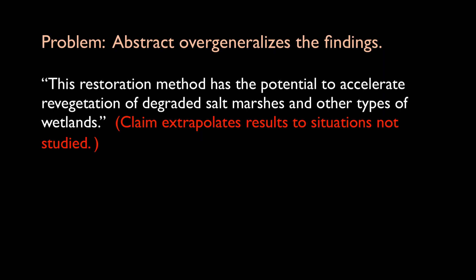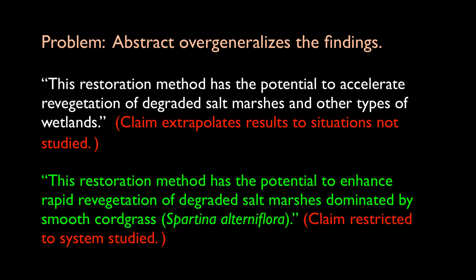Another common exaggeration seen in abstracts is an overgeneralization of the findings from a limited dataset to other systems that were not studied. In this hypothetical example, the restoration study involved just one type of salt marsh. Extrapolating the results to all wetland types is inappropriate. The authors should limit their summary statements to the type of system studied.